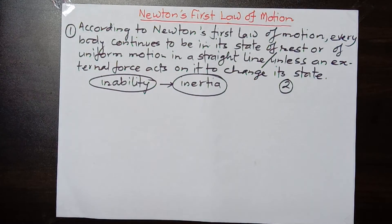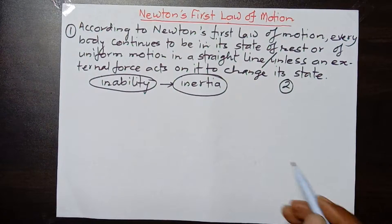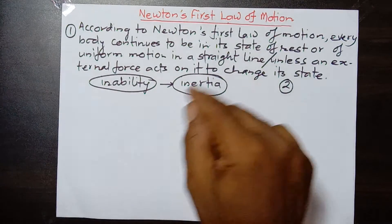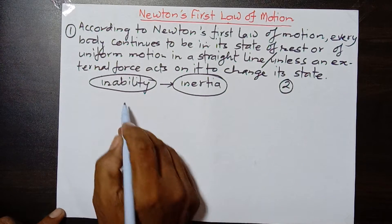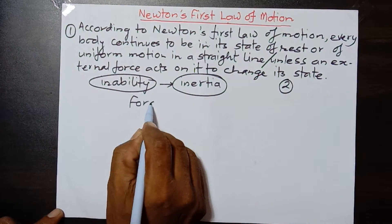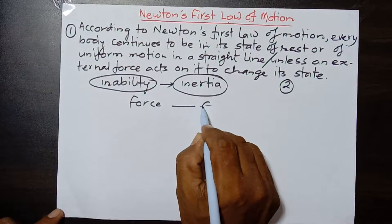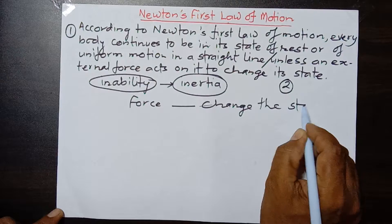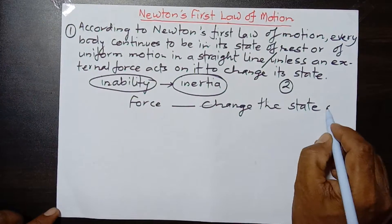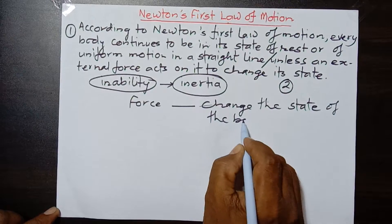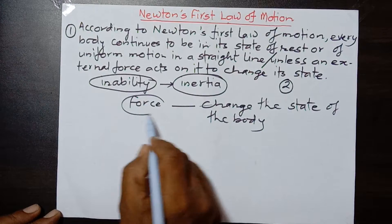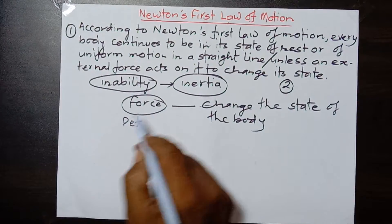Another term that comes up here is inertia. Newton's first law of motion defines inertia. Now look at the last part: unless an external force acts on it to change its state. What does this mean? It means force can only change the state of the body. Force is an agent which can change the state of the body.